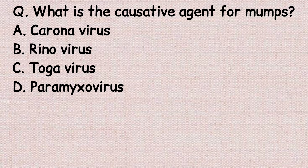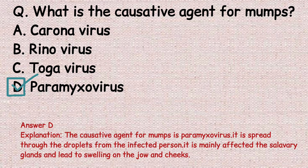The next question: what is the causative agent for mumps? Option A: coronavirus. Option B: rhinovirus. Option C: togavirus. Option D: paramyxovirus. The correct answer is option D, paramyxovirus. The causative agent for mumps is paramyxovirus; it is spread through droplets from an infected person and mainly affects the salivary glands, leading to swelling on the jaw and cheeks.